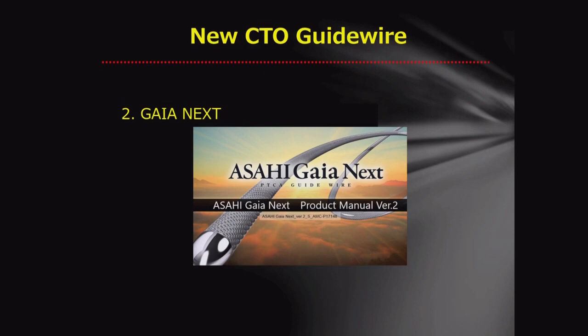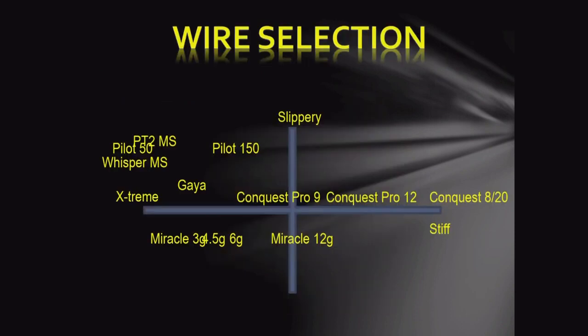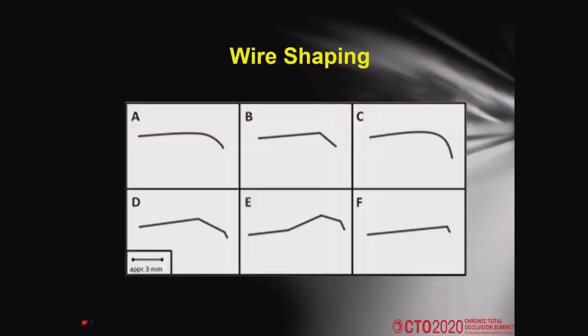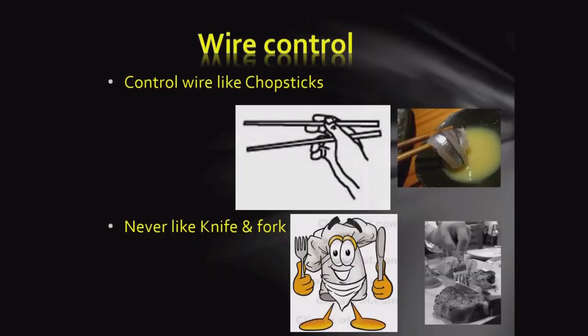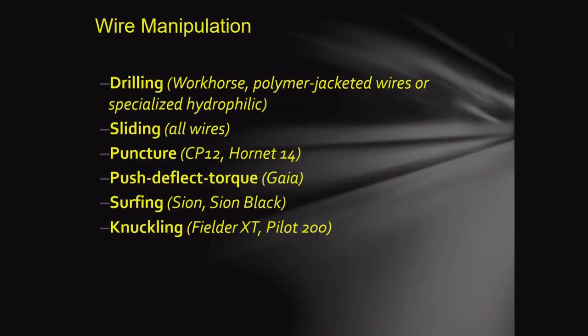The Asahi Gaia Next is coming to market — not yet in Bangladesh. There are different types of wires, from slippery to hydrophilic, from low to high tip load. Wire shaping is very important: give two bends — one just after 2mm, and one after 4 to 6mm. Use the wire delicately, like a chopstick, not like a knife and fork. Methods of wire manipulation include: drilling, sliding, puncture, push, deflect-torque with Gaia, surfing with Sion Black, knuckling with Fielder XT and Pilot 200.